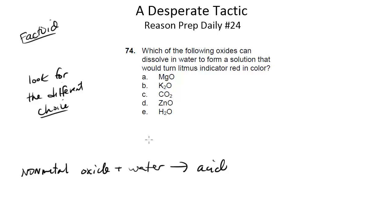And what do we mean by that? You look at the five choices and you say, okay, which one of these is different from the rest in some significant way? So first, again, we can get rid of E because it doesn't make any sense to dissolve water into water and then get an acid, right?